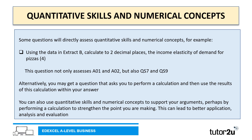This question not only assesses EO1 and EO2 — the assessment objectives — but also quantitative skill 7 and quantitative skill 9. You may also get a question that asks you to perform a calculation and then use the results within your answer. You can also use quantitative skills and numerical concepts to support your arguments, perhaps by performing a calculation to strengthen the point you are making or using data from a table. This can lead to better application, analysis and evaluation.